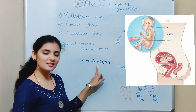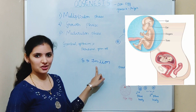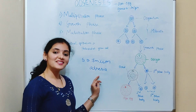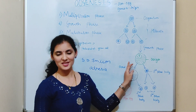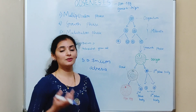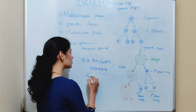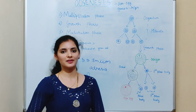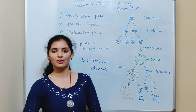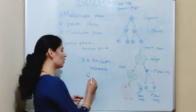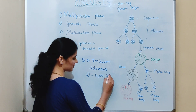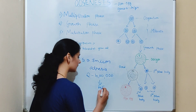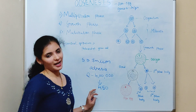Out of these seven million oogonia, most undergo degeneration by a process known as atresia, and some differentiate to produce primary oocytes. At the time of birth, the female fetus will have two million primary oocytes. The production of primary oocytes always takes place before birth — there is no production after birth. Out of these two million, only about four hundred thousand primary follicles will be present at puberty, and of those, only about 450 will mature and produce an egg.